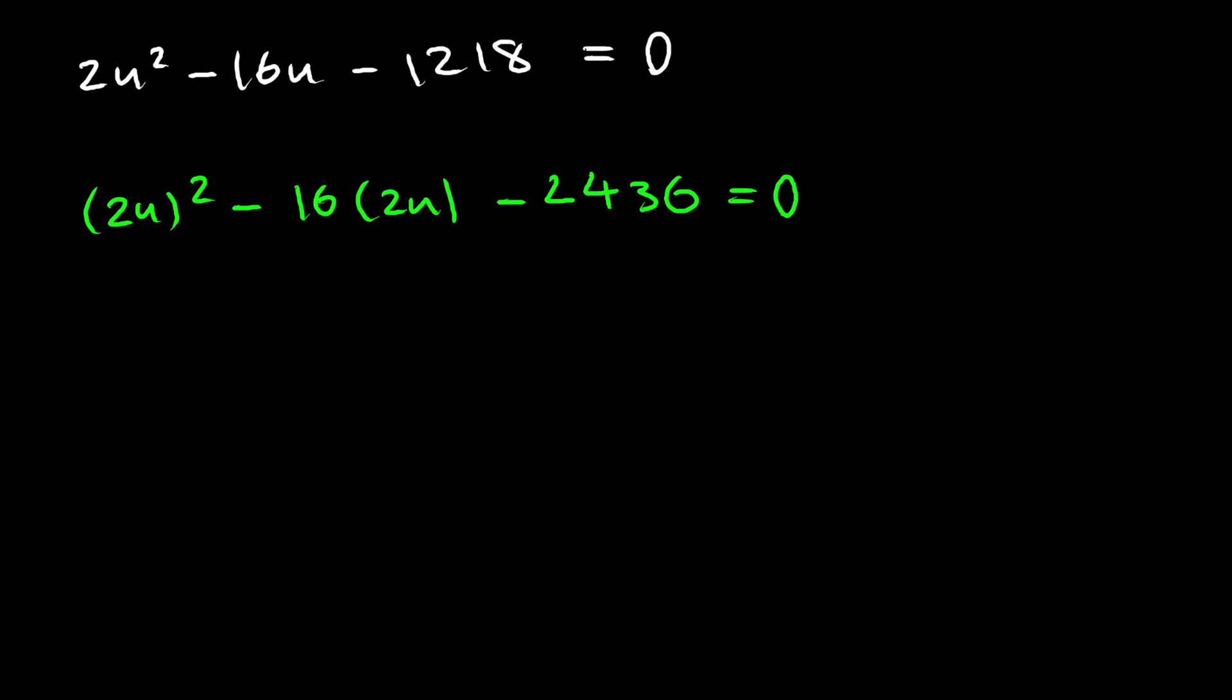let's multiply everything by 2 to get 2u all squared minus 16 times 2u minus 2,436 equals 0. Now, if you factor this, our factors are going to be like 2u minus some number times 2u plus some number equals 0.